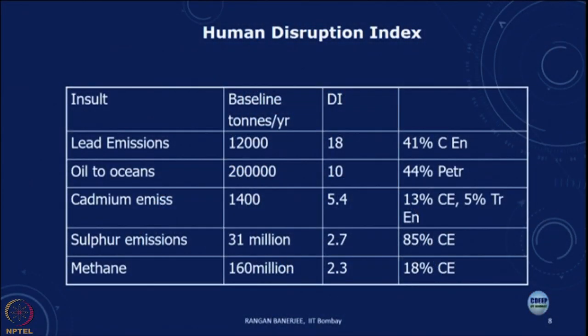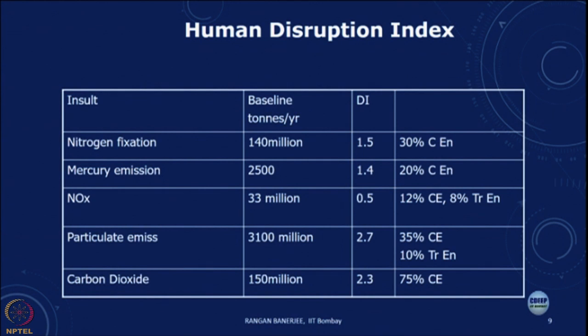Looking at the Human Disruption Index values tabulated by John Holdren, the disruption index for lead emissions, oil to ocean, cadmium emissions, and sulphur emissions are all greater than 1. A large percentage of this is attributable to the energy sector and energy use. Similarly, nitrogen fixation, mercury emissions, nitric oxide, particulate emissions, and carbon dioxide all show up as problems because the human disruption index is greater than 1. This is why we need to change the way we look at efficiency and find ways to mitigate the current way of using energy, which has an adverse impact on the environment.